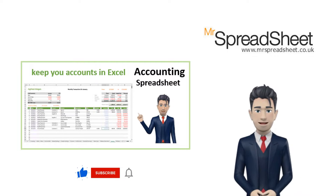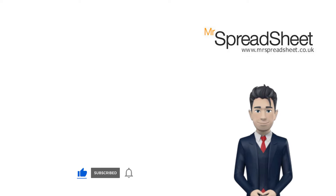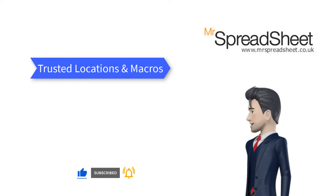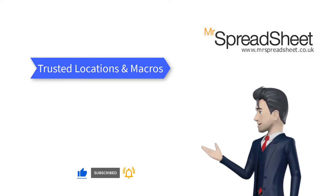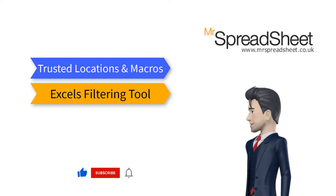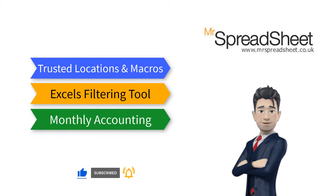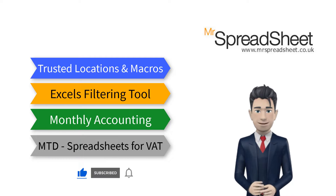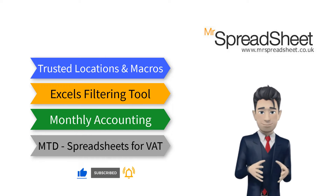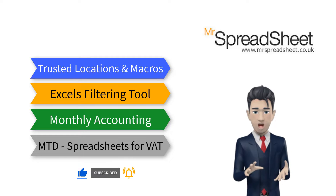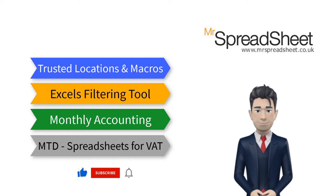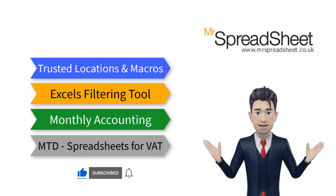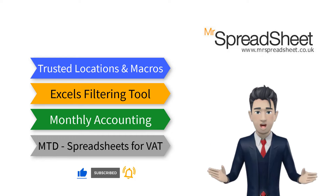The four videos are: firstly, how to create Trusted Locations and store files that use Excel macros; secondly, how to use Excel's filtering tool to examine your spreadsheet data; then, how to use spreadsheets to keep your monthly accounting records; and finally, Making Tax Digital — how to use spreadsheets to collect and submit your VAT. You can view these videos by following the links in the description section below.